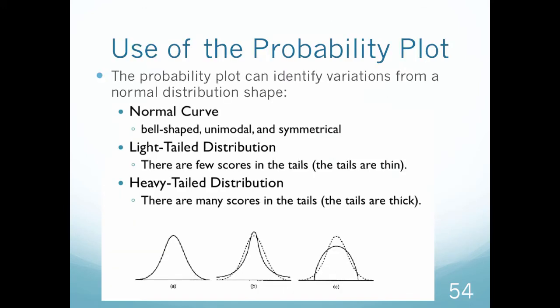The probability plot can identify variations from a normal distribution. So we can tell if something is a normal curve, which is this plot right here. Normal just means that beautiful bell shape, right? And it's symmetrical on both sides.